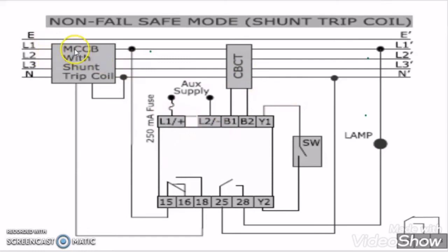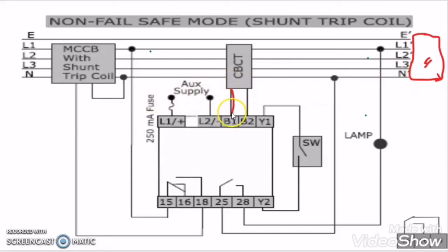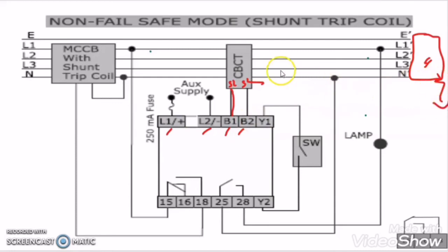Here we have connected one MCCB and the power is coming first to the MCCB breaker. Then the cable L1, L2, L3 — which is R, Y, B — and neutral is passing through the CBCT, and then it connects to the load which we need to protect from any earth fault current. The output of CBCT from the S1 and S2 terminal is connected to B1 and B2 terminal of the ELR in order to have the response from CBCT to ELR. We give power supply to the ELR from the L1 and N terminal or L1 and L2 terminal. Whenever there is an earth fault in the circuit, the CBCT will activate and give response to the ELR.